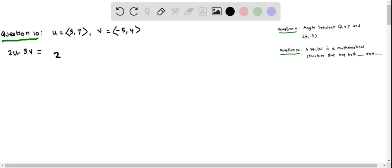This becomes 2 times u vector. I replace u vector as <3, 7> minus 3 times v vector, <-5, 4>. We have to multiply by distributing the 2 with the numbers inside the bracket, and also multiply the -3 with the numbers inside the bracket.